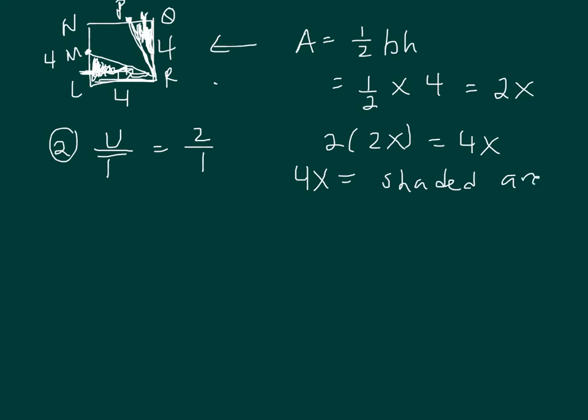Now what's the area of the square? The area of the square is 16. So if I take 16 and subtract off the shaded area, I'll be left with the unshaded area. And remember, I'm trying to find this x. So 16 minus 4x represents the unshaded area.